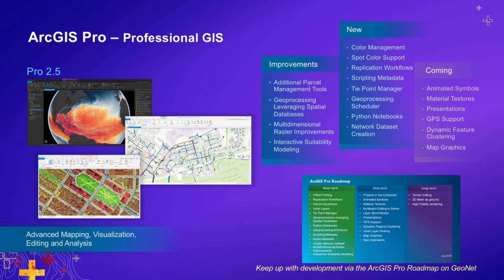We won't highlight every single item updated in Pro because there's a helpful roadmap document updated by the Pro product team and available through the GeoNet community. Make sure to go to the GeoNet community and download that roadmap so you can see everything that has been updated.